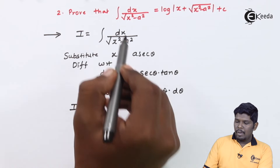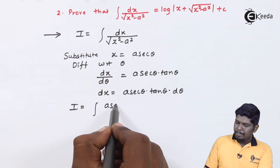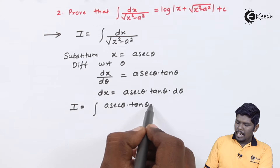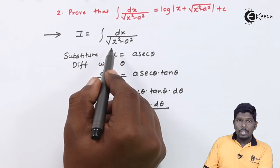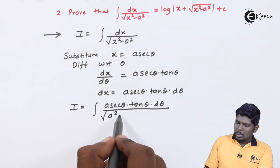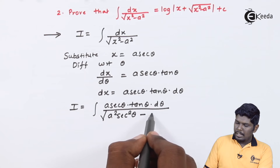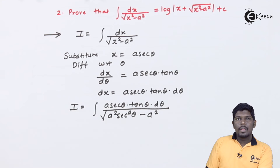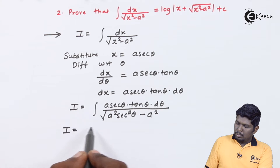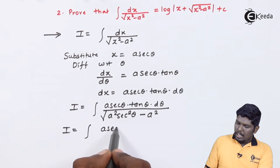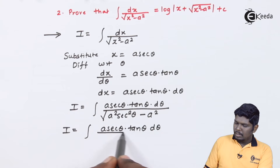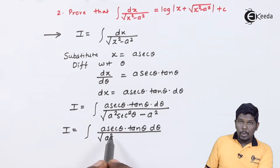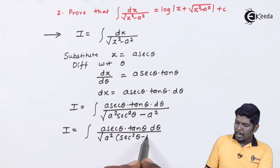Therefore, in the integral I, the value of dx is a sec theta into tan theta into d theta, divided by under root of x squared, which is a squared sec squared theta, minus a squared. In the next step, we can take a squared common in the denominator, giving a sec theta into tan theta d theta upon under root of a squared into sec squared theta minus 1.